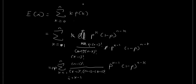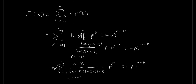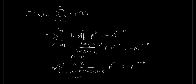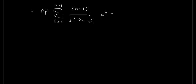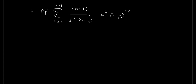We can now rewrite everything using the index i instead of k. So we have n minus 1 factorial, divided by i factorial, divided by n minus 1 minus i factorial. Then we have p to the power of i, and 1 minus p to the power of — instead of n minus k, we write this as n minus 1 minus k minus 1, which is n minus 1 minus i.